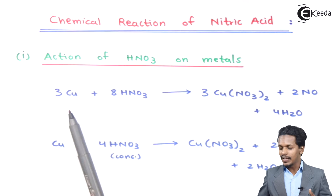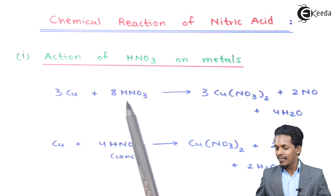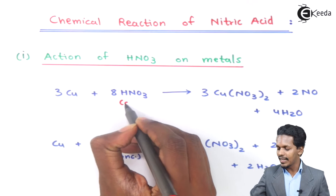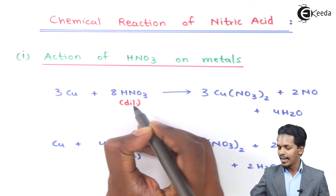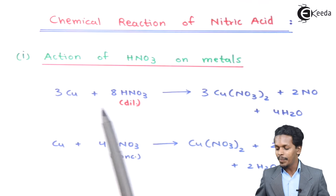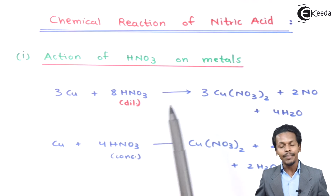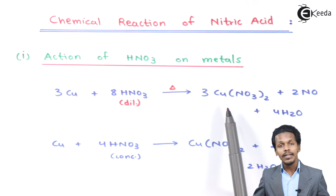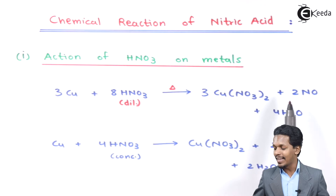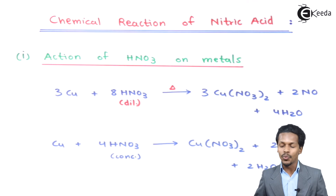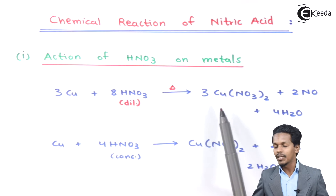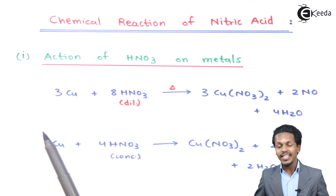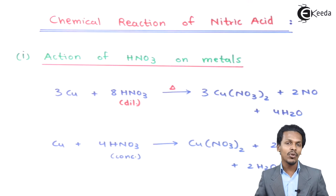Consider copper as a metal. When copper reacts with dilute nitric acid, three moles of copper reacts with eight moles of HNO3 — with a certain temperature provided — to give copper nitrate along with two moles of nitric oxide (NO) and four moles of H2O. The main product is copper nitrate.